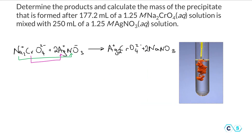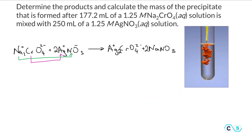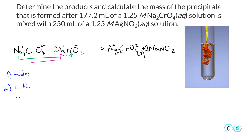Checking the solubility table, silver chromate is a precipitate — it is not soluble in water. There is actually an image of this reaction: the solid red-brownish precipitate is the silver chromate. To find how much precipitate forms, we will: first find the moles of each reactant, second determine the limiting reactant, and third calculate the amount of precipitate.